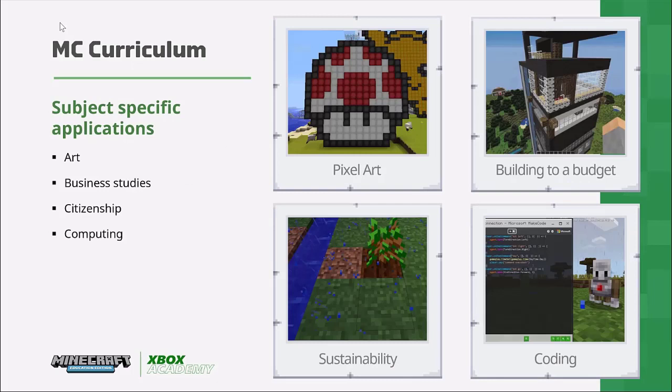You can create pixel art in Minecraft using different coloured blocks. There's also a project called Tate Modern Minecraft where students can explore artwork in the Tate Modern Gallery, pick a favourite artist, and recreate that artist's work in Minecraft. You can have children build on a budget or explore sustainability — put them on a desert island, let them build what they want, and when they run out of resources have them plant trees and talk about sustainability. You can also have children code within Minecraft.